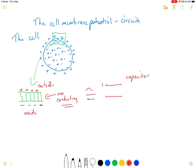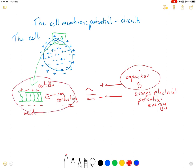So with a capacitor we have a positive charge on one plate and a negative charge on the other side. And this capacitor stores electrical potential energy. And so basically we have a capacitor here and we have a capacitor here.